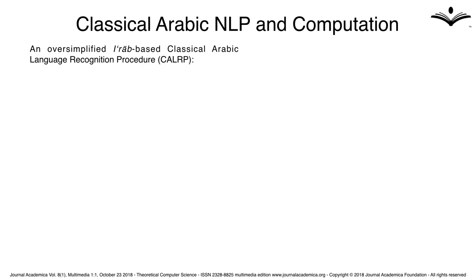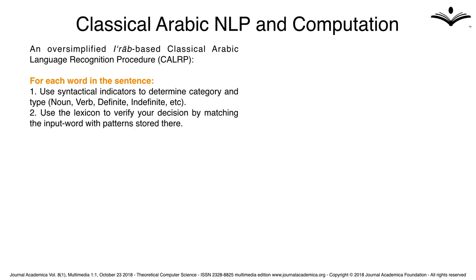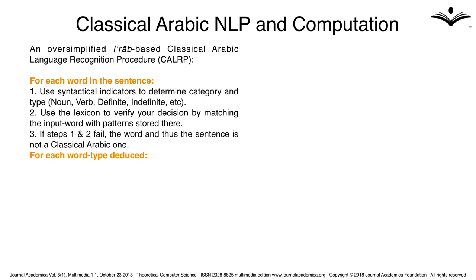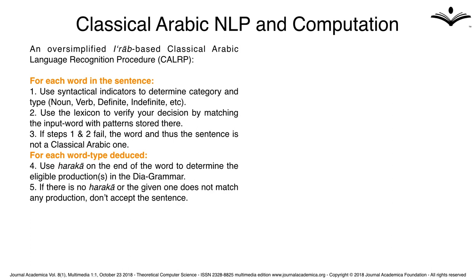Let's imagine an oversimplified classical Arabic language recognition procedure called CALRP. For each word in the sentence: first, use syntactical indicators to determine category and type — noun, verb, definite, indefinite. Second, use the lexicon to verify the decision by matching the input word with patterns stored there. Third, if steps one and two fail, the word and thus the sentence is not a classical Arabic one. Then, for each word type deduced, use haraka on the end of the word to determine the eligible production rules in the grammar. If there is no haraka or the given one does not match any production, don't accept the sentence. If there are matching productions, apply them to the current word and to previous or later ones if necessary, giving priority to productions covering more words. If you reach a noun phrase or verb phrase, accept the sentence, else reject.